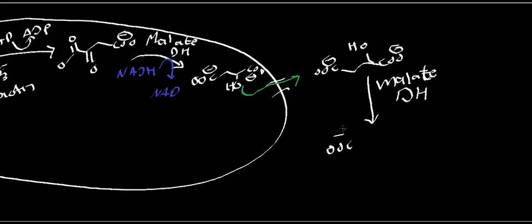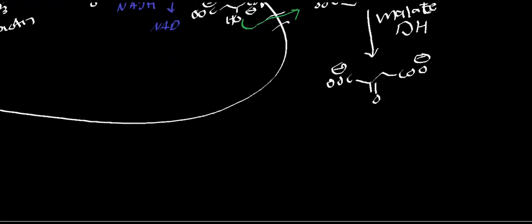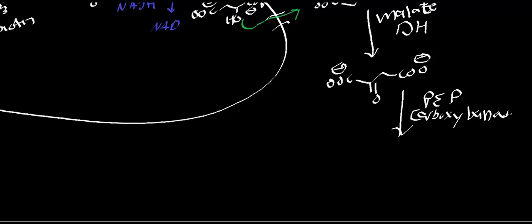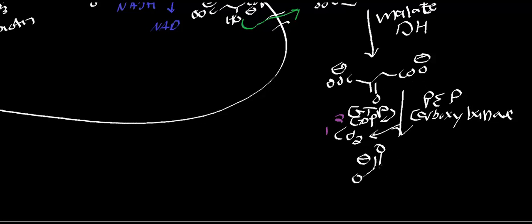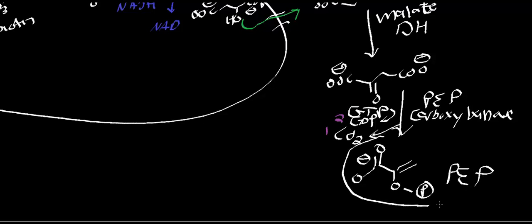The cytosolic malate dehydrogenase regenerates oxaloacetate. From here, we use phosphoenolpyruvate carboxykinase (PEP carboxykinase). This burns a GTP to GDP and releases carbon dioxide — the CO₂ is lost first, then the GDP — and produces phosphoenolpyruvate (PEP). That's the first pathway.